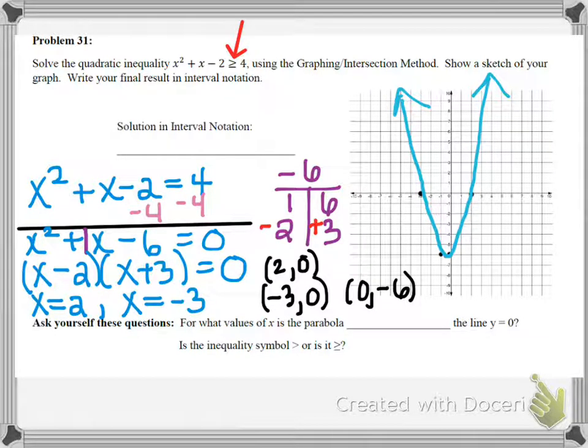And now we need to go back to the fact that this was an inequality, remember. So our goal here isn't just to graph the parabola. Our goal is to find the solution to this inequality. So since the inequality is a greater than inequality, I want to ask myself, for what values of x is the parabola above the line y equals 0? And the reason I'm asking above is because my inequality was greater than. So if it's greater than, it means I'm looking above the line y equals 0. Now remember, the line y equals 0 is the same as the x-axis.